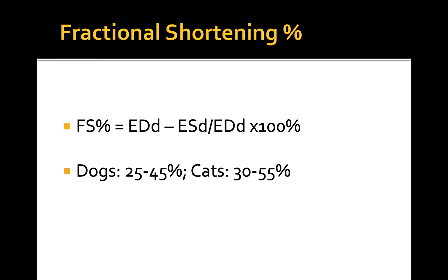Normal fractional shortening in dogs is about 25% to 45%, and in cats 30% to 55%. Large and giant breed dogs tend to have lower normal fractional shortening, closer to 25% to 30%.